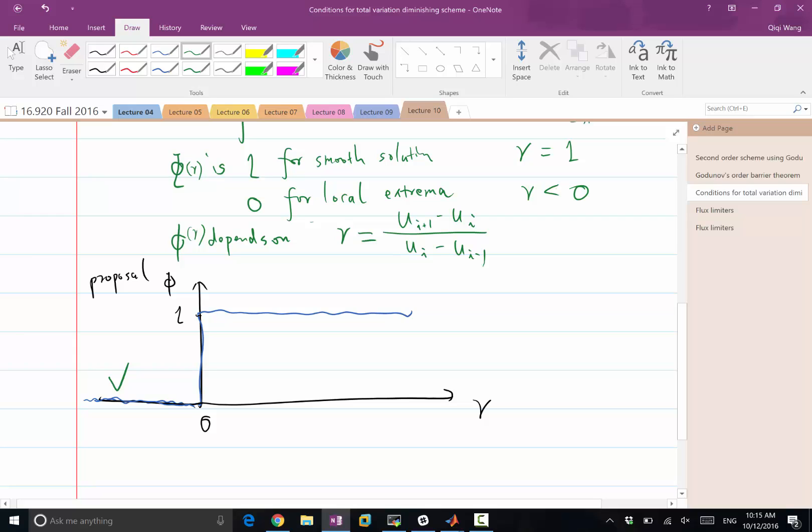So φ of r should be exactly equal to 0 whenever r is less than 0. Okay, let's then figure out if the positive part of this proposal works. We only considered a case where r is equal to 1, and we know that φ is equal to 1 is the appropriate value. So let's consider two cases when φ is less than 1, when r is less than 1, greater than 0, and when r is greater than 1.